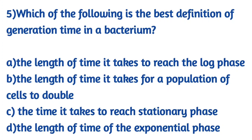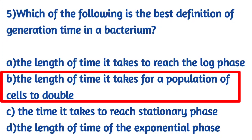Which of the following is the best definition of generation time in a bacterium? Options include: the length of time it takes to reach the log phase, the length of time it takes for a population of cells to double, the length of time to reach the stationary phase, and the length of the exponential phase. The right answer is option B — the length of time it takes for a population of cells to double. This is the best definition of generation time.